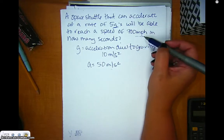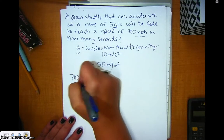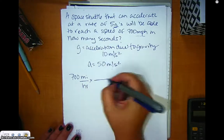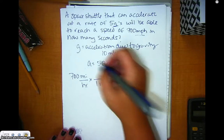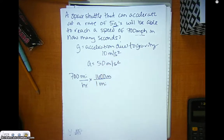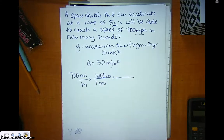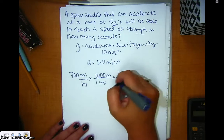I'm going to get the velocity into meters per second. Starting with 700 miles per hour, I'll do some unit analysis. A mile is about 1,600 meters, so I'll put one mile on the bottom and 1,600 meters on the top. To go from hours to seconds, I'll put one hour on the top, and there's 3,600 seconds, or 60 times 60, in an hour.